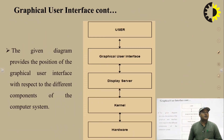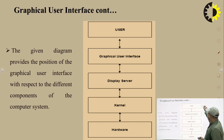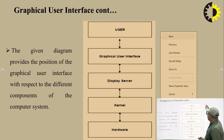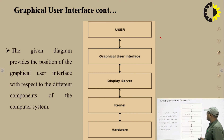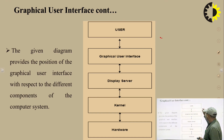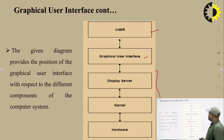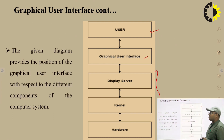Here I have shown a diagram of where the graphical user interface is placed in a computer system. The user interacts with the computer via the graphical user interface, and the display server, kernel, and hardware are also important components.